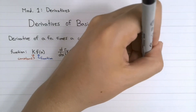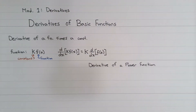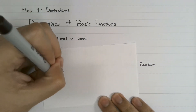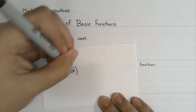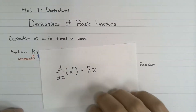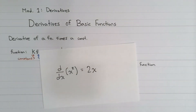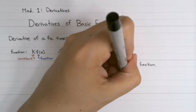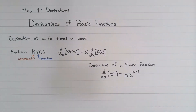Next we will look at power functions. What if we want to find the derivative with respect to x of a function x to the power of n? We actually did something like this in the previous video, where we found the derivative of x squared was 2x. Let's generalize this so we can apply it for any exponent: the derivative with respect to x of xⁿ is equal to n times x to the power of n minus 1.